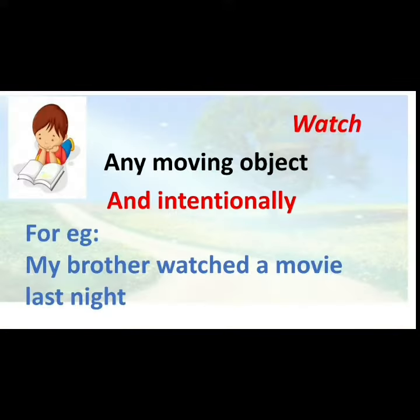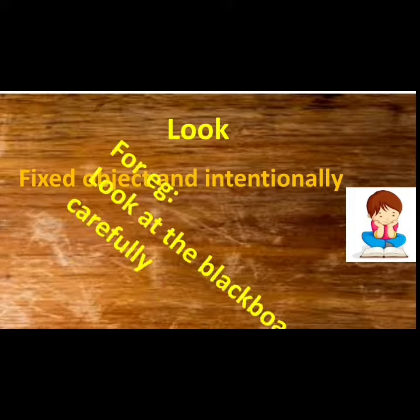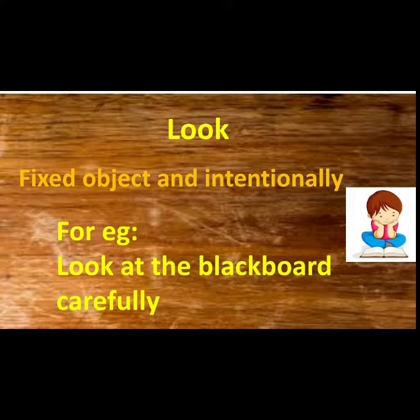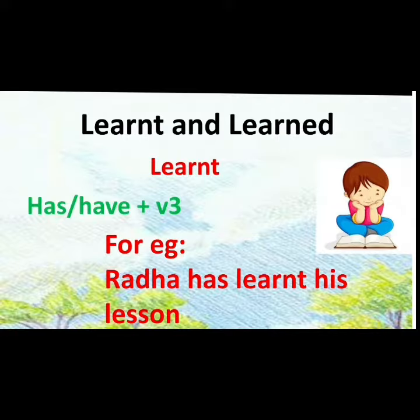Next is see, watch, and look. See — our eyes always have things passing in front of them and we see them naturally. For example, 'I saw my friend there.' Watch is for any moving object — when we intentionally watch something moving. For example, 'my brother watched a movie last night.' Look is for a fixed object that doesn't move, when we intentionally look at it by our own will. For example, 'look at the blackboard.'